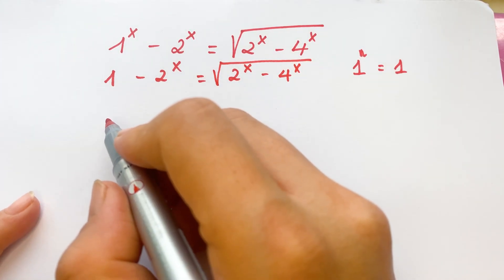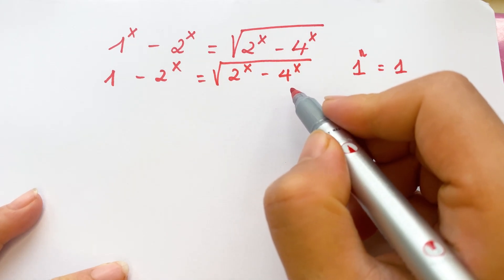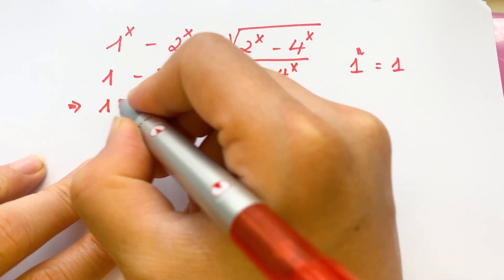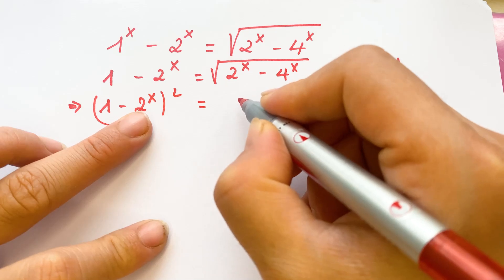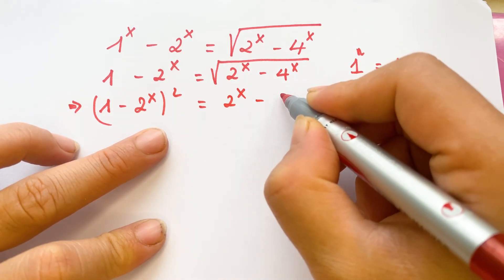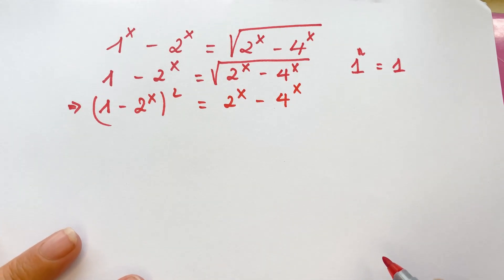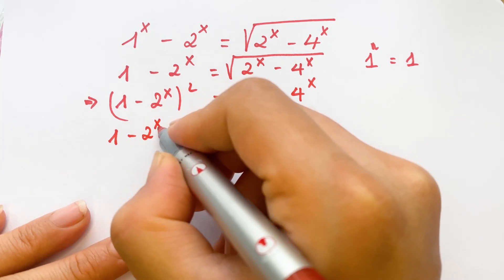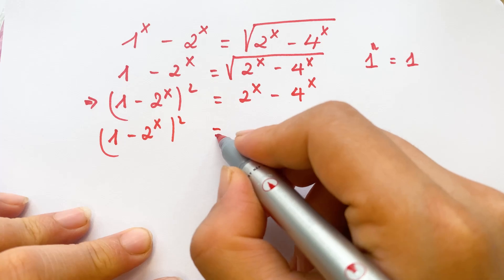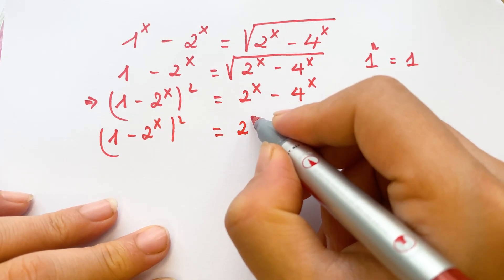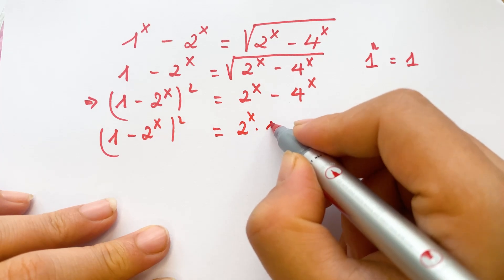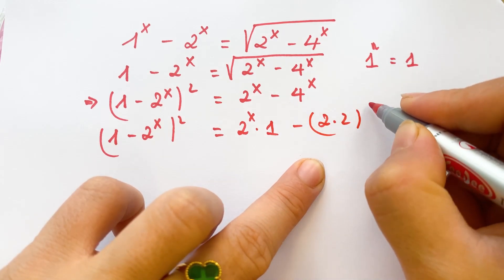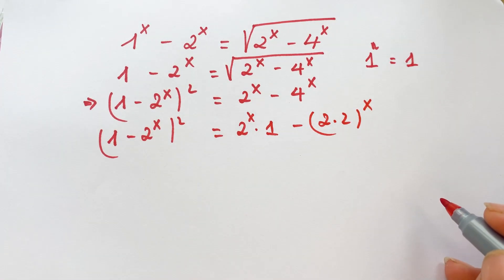And so, in the next step, you can take the square root of both sides. Therefore, we have 1 minus 2 power x, whole power squared, equals 2 power x minus 4 power x. And 4 power x you can write as 2 times 2, whole power x.